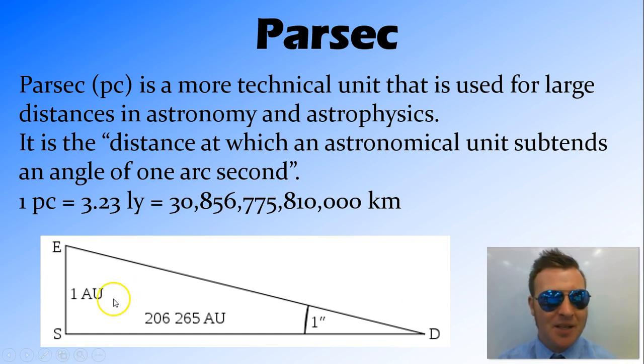But what that means is that we've got the Sun here, the Earth here. And so we've got one astronomical distance between the Sun and the Earth. And that distance is a triangle with an angle, so it's a very, very pointy triangle, much pointier than this one looks like, of one arc second.